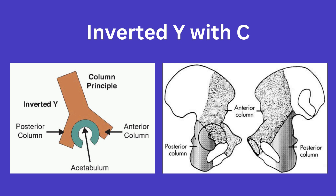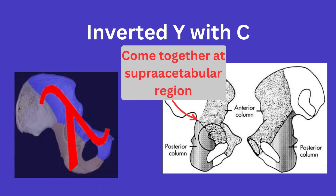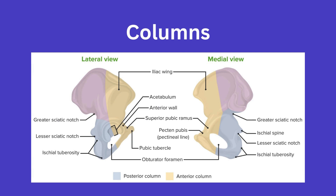You can see how the columns are laid out on the hemipelvis here. The anterior and posterior columns meet at the supracetabular region, and some will refer to the shape as the Greek letter lambda, with the long portion of the letter representing the anterior column. The anterior column runs from the superior pubic ramus into the iliac wing, while the posterior column runs from the ischiopubic ramus through the ischium and toward the ilium.